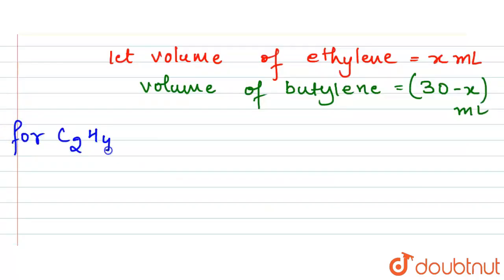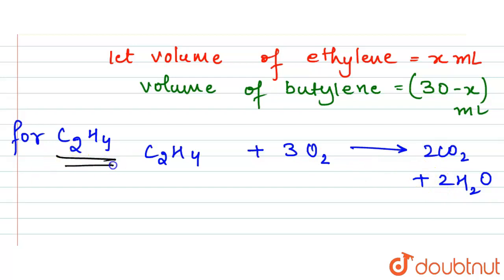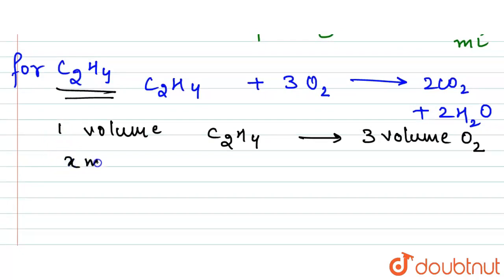For C₂H₄, which is ethylene, the combustion reaction is: C₂H₄ + 3O₂ → 2CO₂ + 2H₂O. According to this reaction, one volume of C₂H₄ requires three volumes of O₂. So when we have x ml of ethylene, it will require 3x ml of O₂.